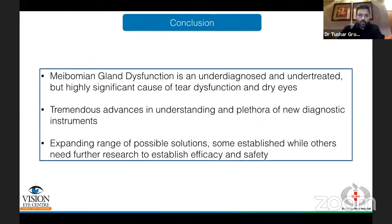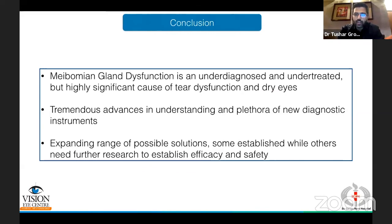To conclude, meibomian gland dysfunction is an underdiagnosed and undertreated entity, but extremely significant and common, causing dry eye in many patients. There are a whole range of new diagnostic instruments available, and it is up to the practitioner to decide what is most relevant to their practice and cost setting. A range of treatment solutions is available — some with longer track records and more supporting literature, while others are more recent and require closer evaluation.